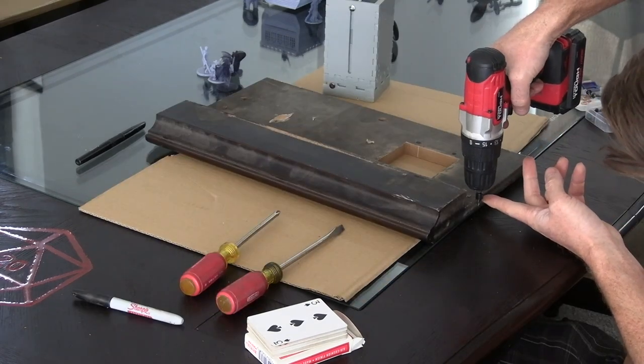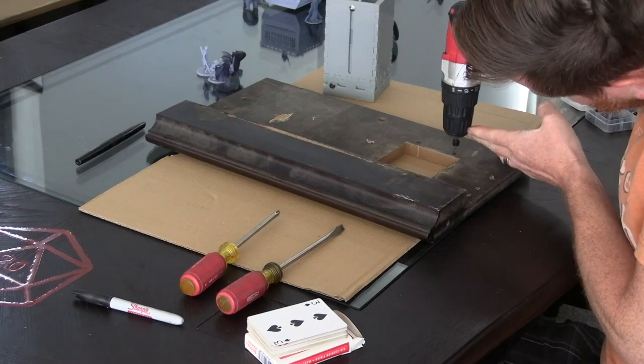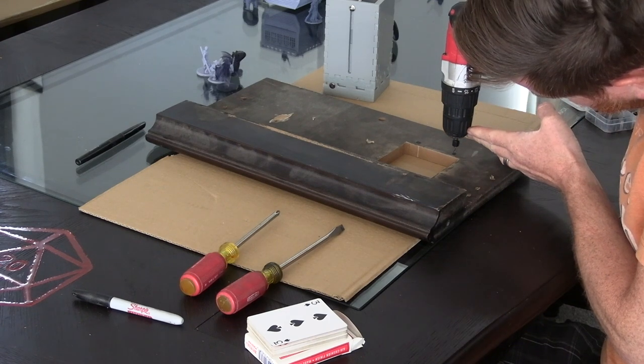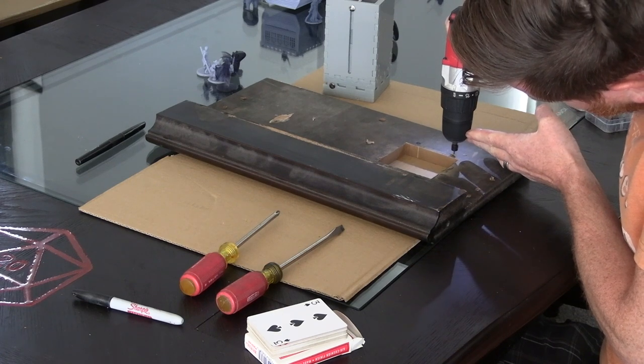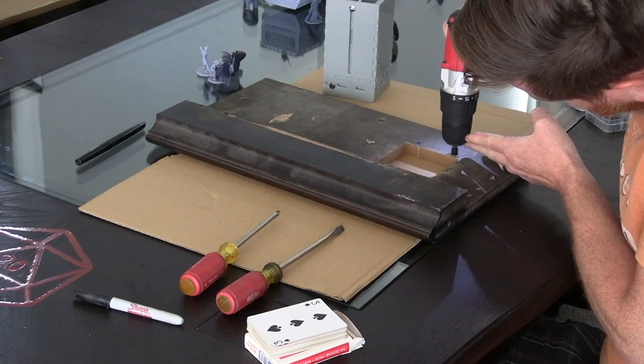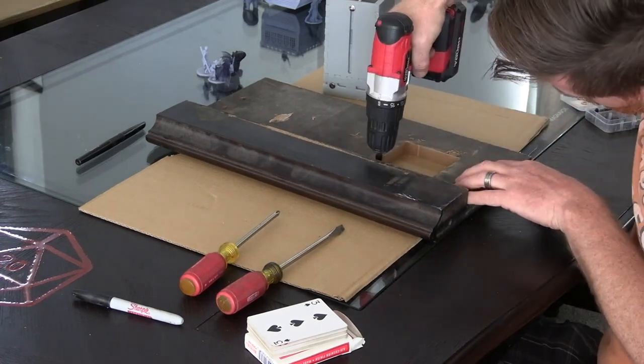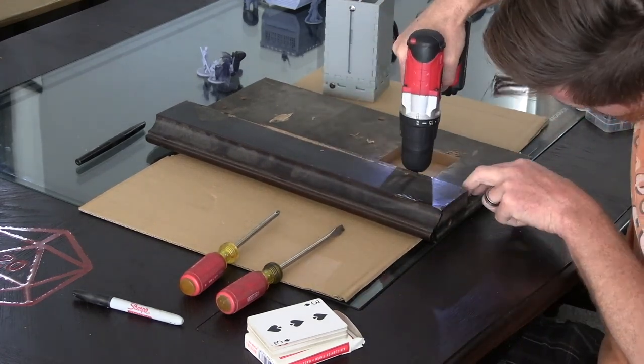Next, we're going to drill four pilot holes for the four wood screws that will attach the brackets. Make sure that the drill bit that you're using does not protrude down further than the thickness of the table. If it does, use an extra piece of wood on top of the table as a spacer to ensure that the drill bit doesn't go all the way through and ruin the finish.